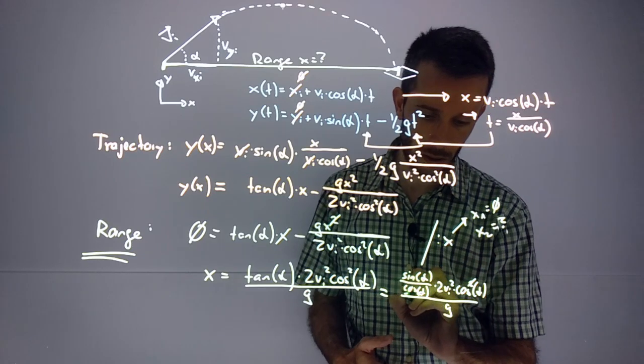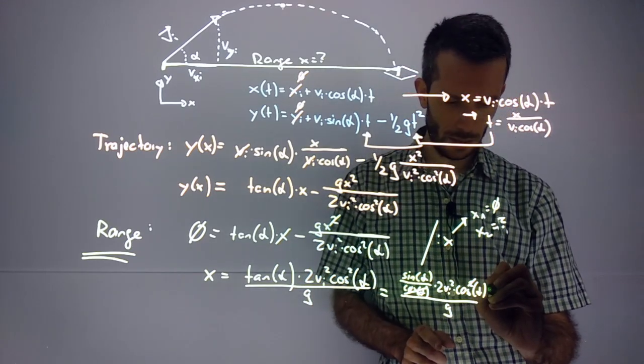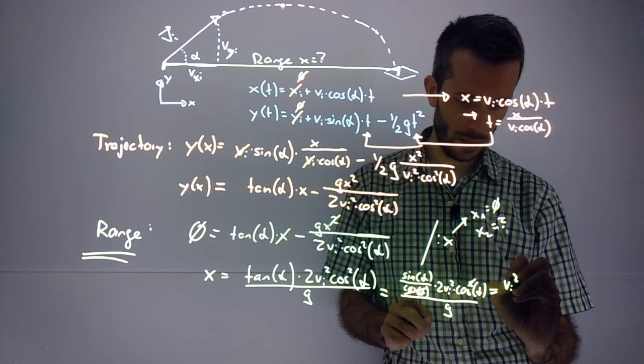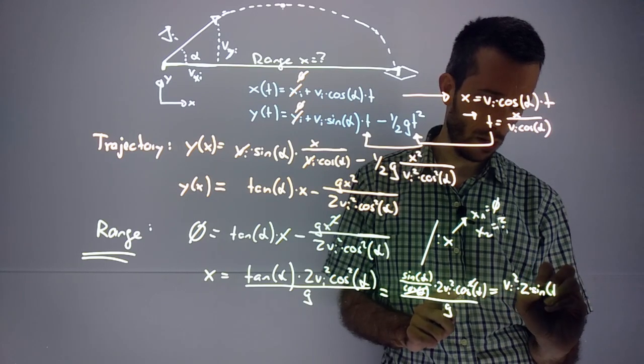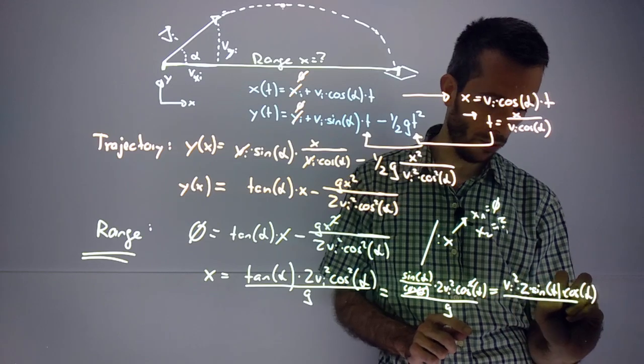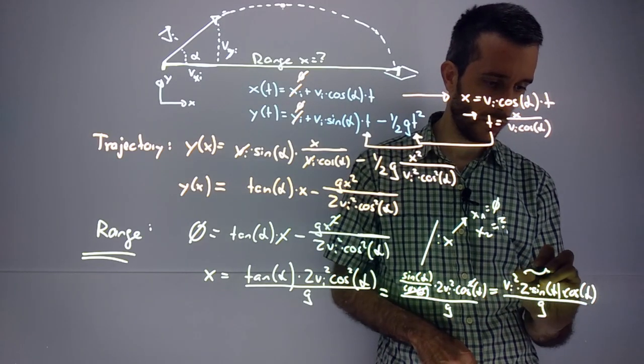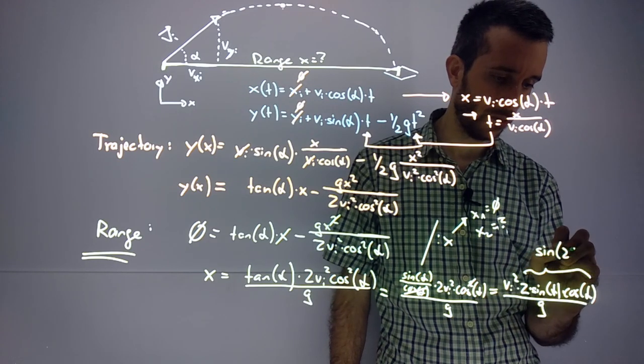And if I rewrite this, I get v_initial² times 2 times sin(α) times cos(α) over g.